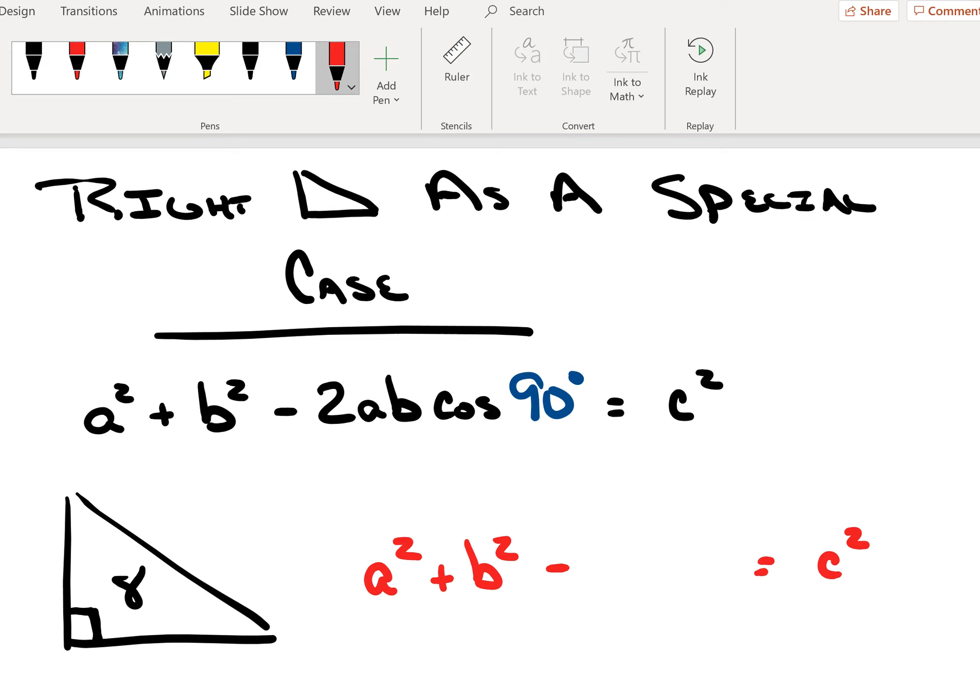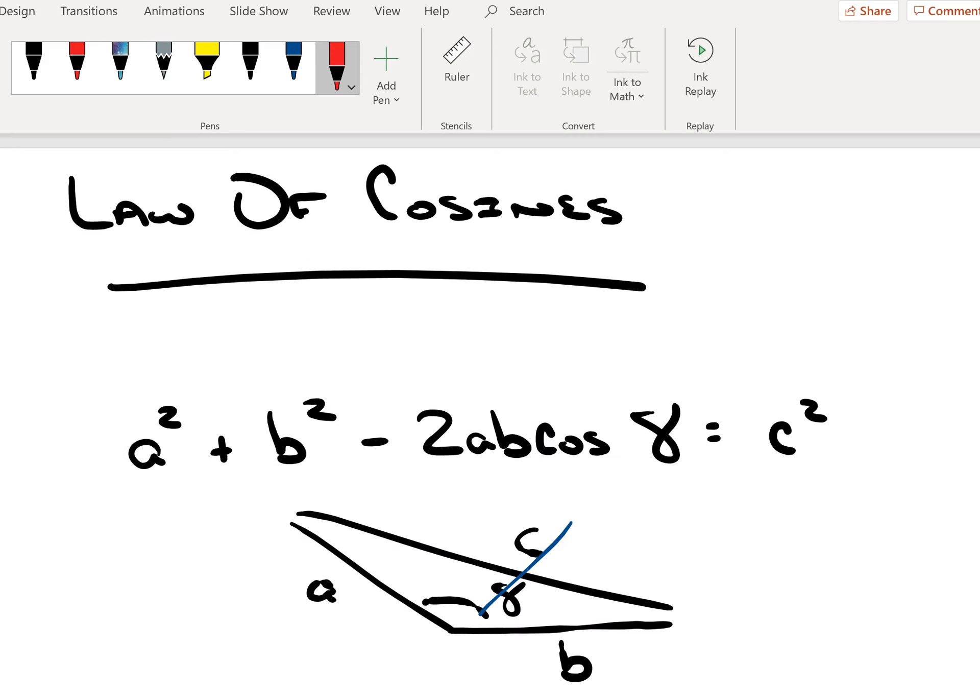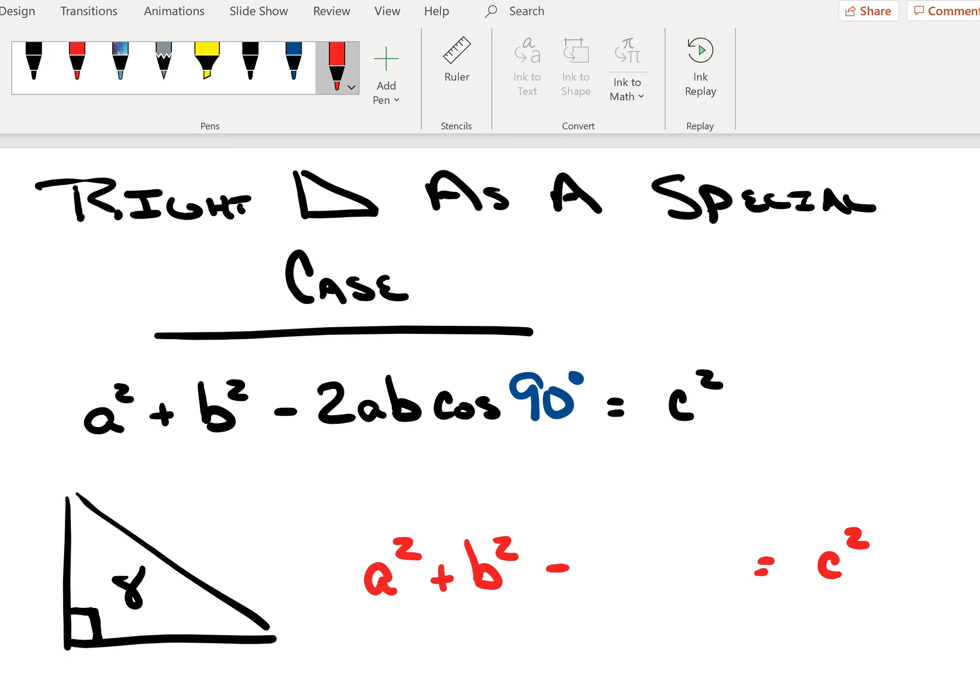By doing this we substitute in 90 degrees for the value of gamma inside the law of cosines. So we have A squared plus B squared minus 2AB cosine 90 degrees equals C squared. But the cosine of 90 degrees is exactly 0, and so when I put a factor of 0 in right here, this entire term collapses to 0.